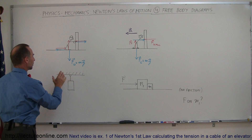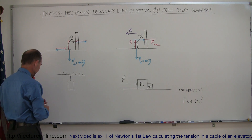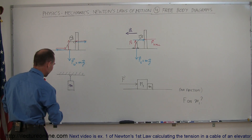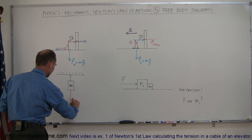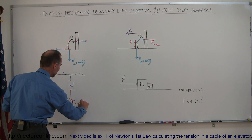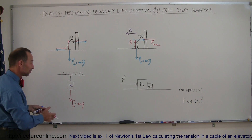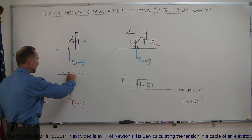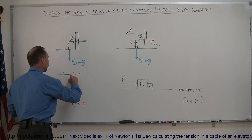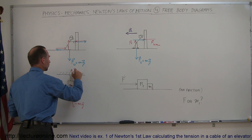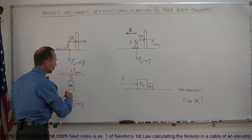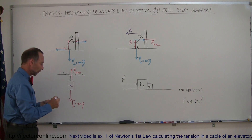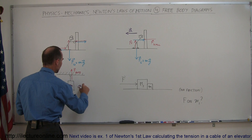Looking at this next situation, we have something hanging from the ceiling — an object with mass m. What are all the forces acting on this object? We have the force of gravity pulling down, equal to m times g. If that were the only force, the object would accelerate downward. But there's a string — a rope — which keeps the object from falling, so there is a pull of the rope upward, F of the rope. Newton's third law tells us these forces are equal in magnitude and opposite in direction, so they cancel out and there is no acceleration; a equals zero.